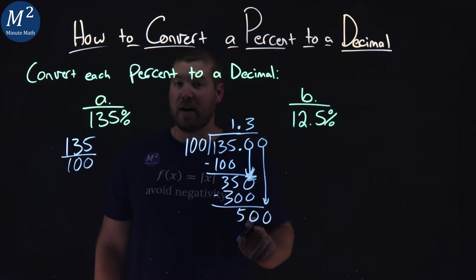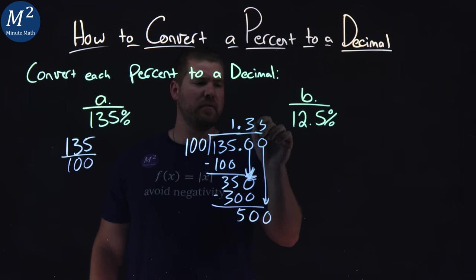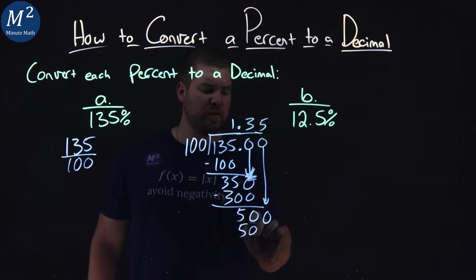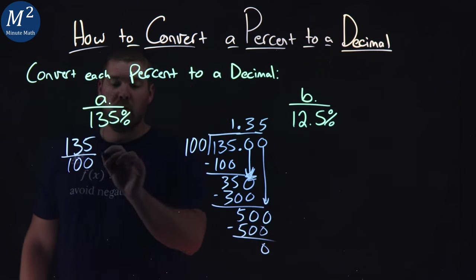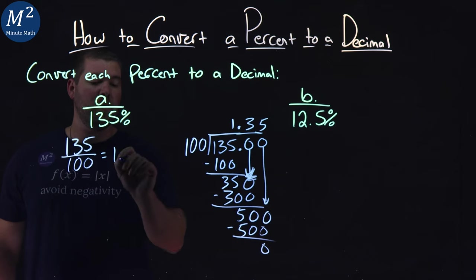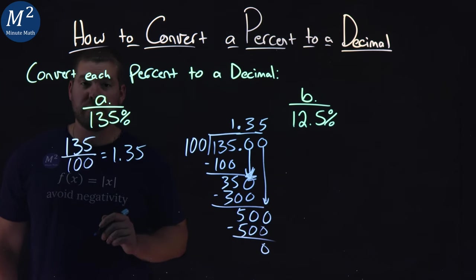Bring down 0. 100 into 500, that's going to be 5 times. 5 times 100 is 500. Subtract the two, we get a 0. So, 135 over 100 is equal to 1.35 as a decimal.